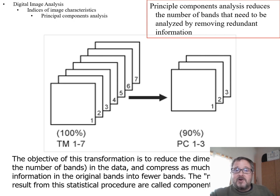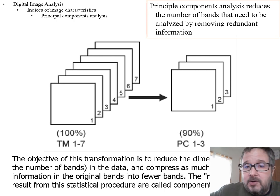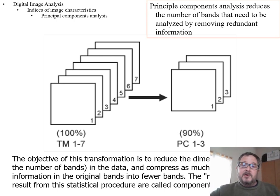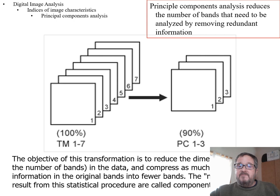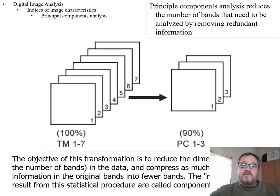When you do the calculation, you can extract up to as many principal components as you have original bands — up to seven from a seven-band image. But the first few principal components will explain almost all of the information in the image. For a typical six or seven band TM image, you might find that only three principal components are needed to explain almost all of the variability.